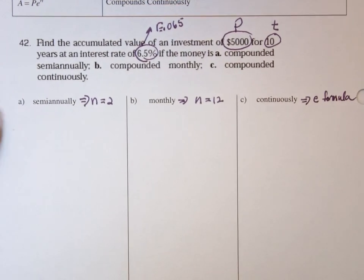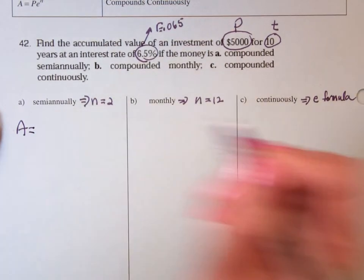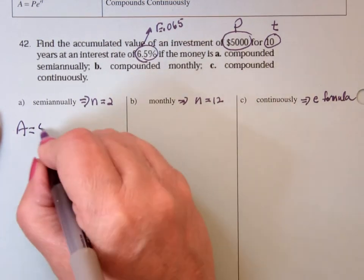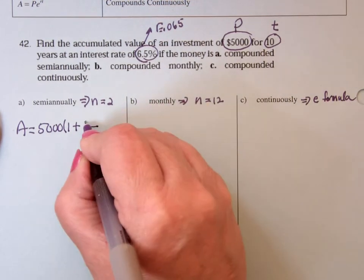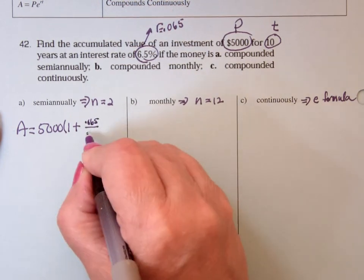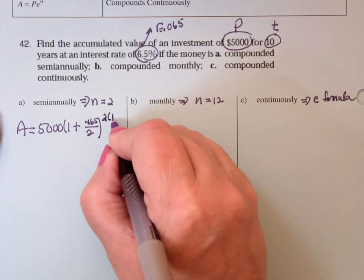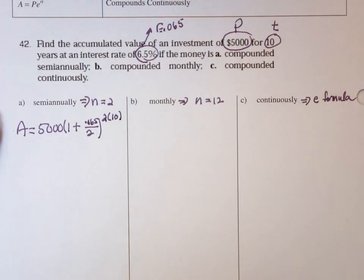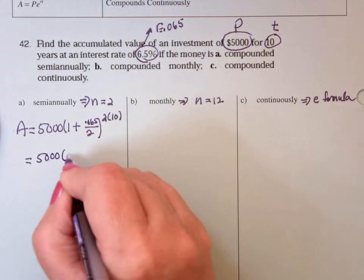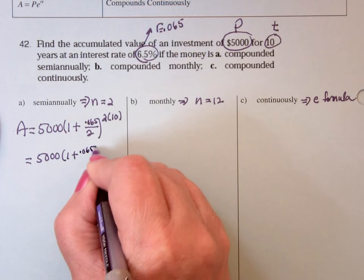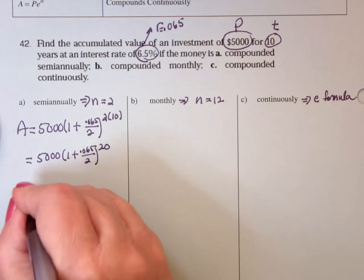So it's a plug and chug. So A is, what did I start out with? $5,000 times 1 plus R, which is .065, divided by N, which is 2, to the N, which is 2, times T, which is 10. So it's 5,000 times 1 plus .065 divided by 2 to the 20. And that's where I leave it to move to my calculator.